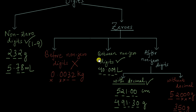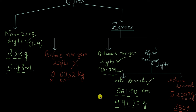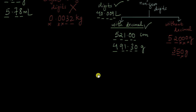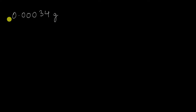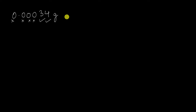Now let us look at some examples. The first number is 0.00034 grams — how many significant digits? All of the leading zeros are not significant because they come before non-zero digits. Only 3 and 4 are significant, giving us 2 significant figures. Next, 0.0209 cubic centimeters — how many significant digits? There are three: the first two zeros are not significant, but the zero between the 2 and the 9 is significant because it is between non-zero digits.